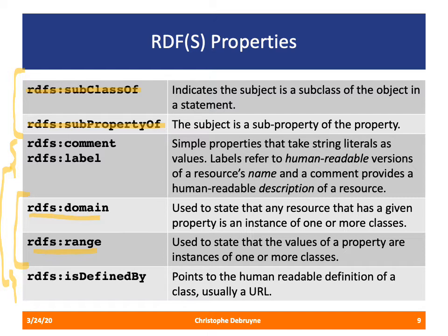The three other properties are meant for human consumption. RDFS label provides labels to things, and comments can be used for descriptions, definitions, and paragraphs. Then there's RDFS isDefinedBy, allowing us to point to a human-readable definition of a class. This is usually a URL, but can also be a bibliographic reference stored inside the RDF document.